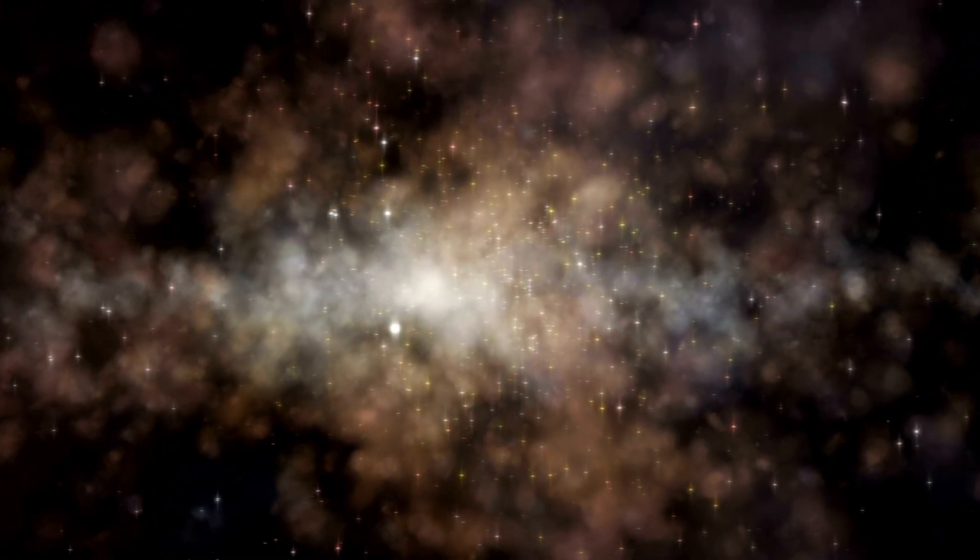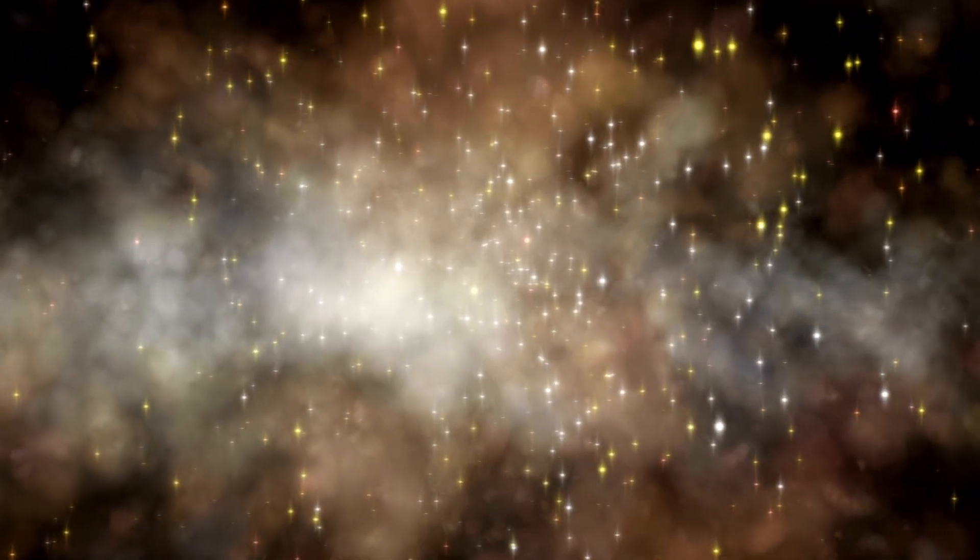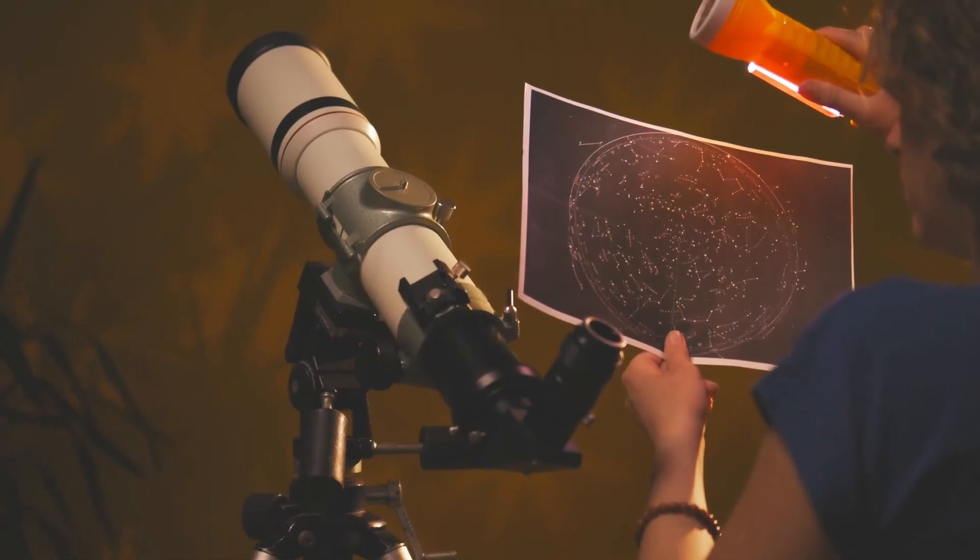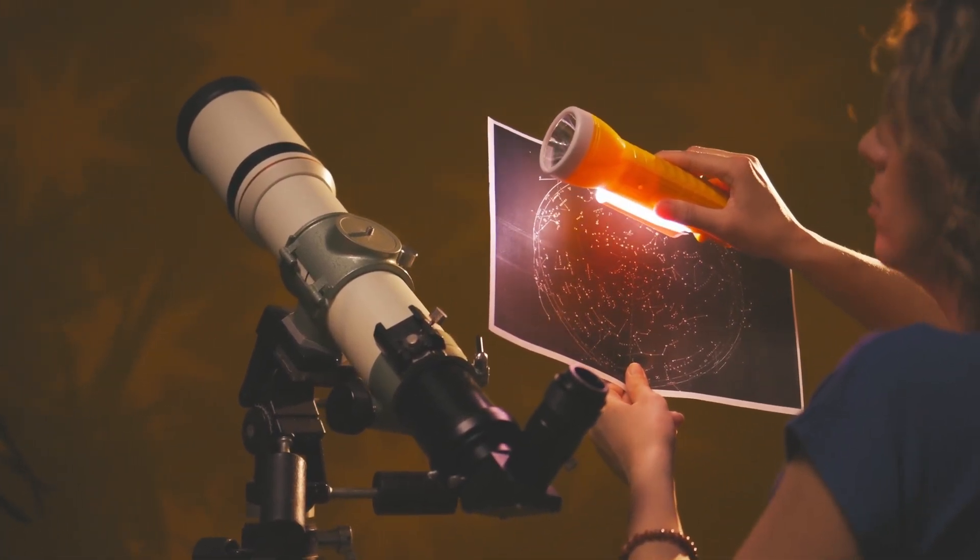The new images also heighten attention on how 3.I-ATLAS interacts with solar radiation and the solar environment. In previous observations, the object displayed a sun-facing plume rather than a classic tail, meaning dust and gas are being ejected preferentially on the side facing the sun rather than being blown directly away.